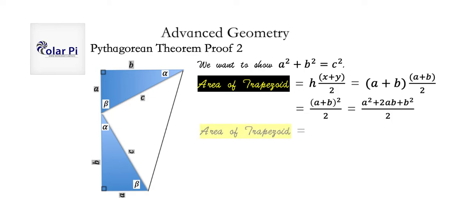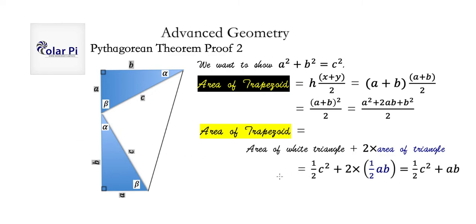But there's another way to calculate the area of the trapezoid. And that's by adding the area of this white right isosceles triangle to twice the area of one of the blue right triangles. So, this is the other way to find the area of the trapezoid. Okay, so if we make the appropriate calculations, the area of the white isosceles right triangle is one half times c squared. And then we have two times the area of one of the blue right triangles is one half a b. And if we simplify that all the way, we get this.